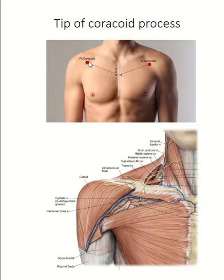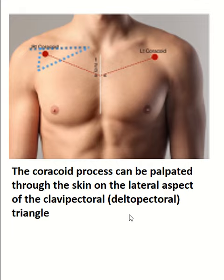Tip of the coracoid process. The coracoid process can be palpated through the skin on the lateral aspect of the clavipectoral triangle, also known as the deltopectoral triangle.